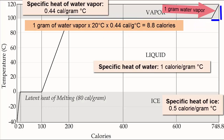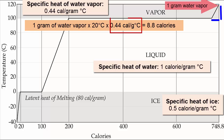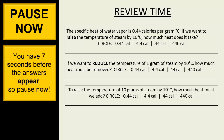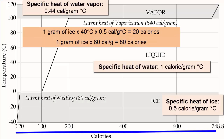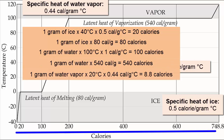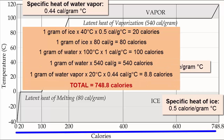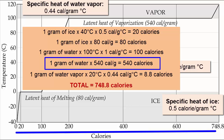Finally, we add 8.8 more calories to raise the temperature of the resulting steam to 120 degrees Celsius — the specific heat of steam is 0.44 calories per gram degree Celsius. When we add everything up, it took a total of 748.8 calories of heat to make the complete change, but most of that heat was required for the vaporization stage.